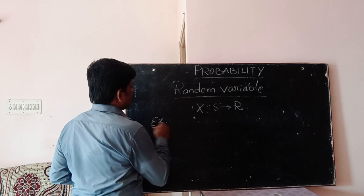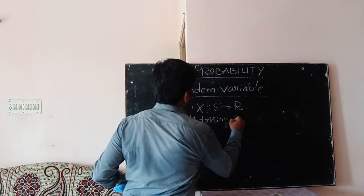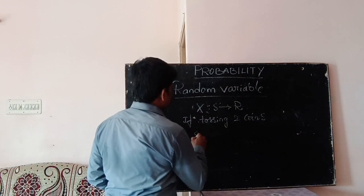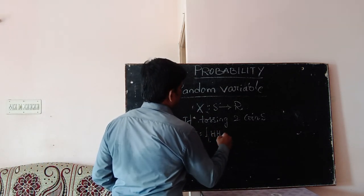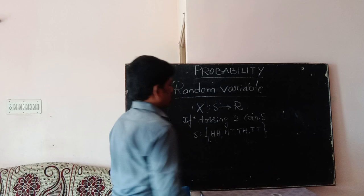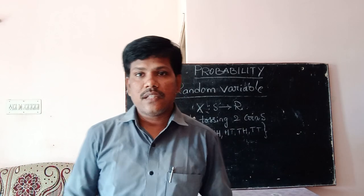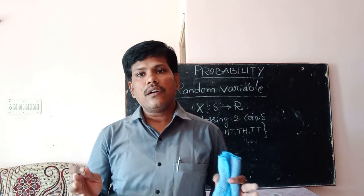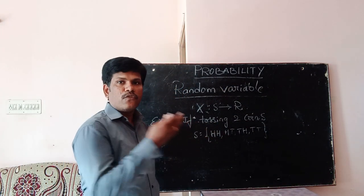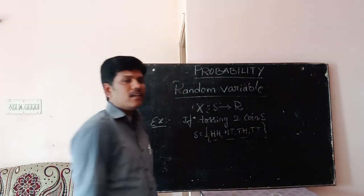For example, if tossing two coins simultaneously, then we get the sample space. The sample space is the set of all possible outcomes of an experiment. If tossing two coins, we have total four possible outcomes: head-head, head-tail, tail-head, and tail-tail.